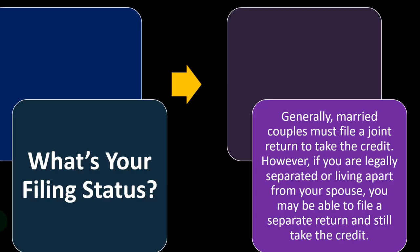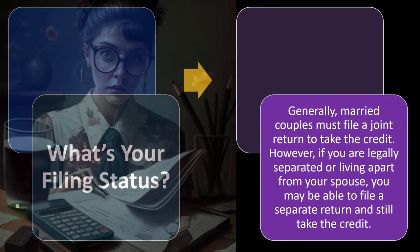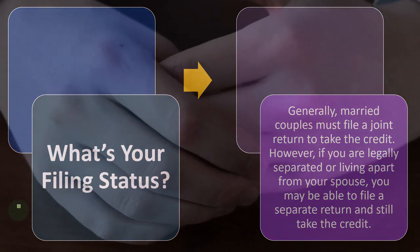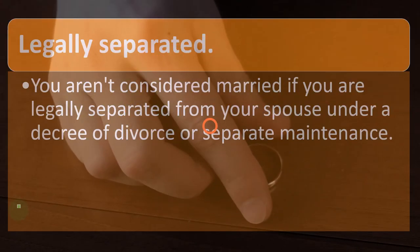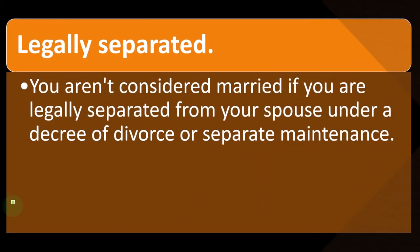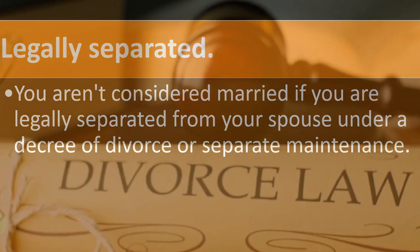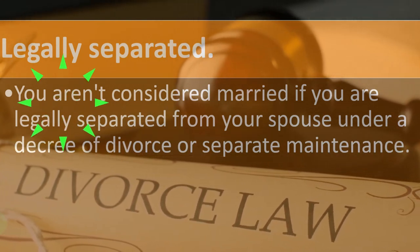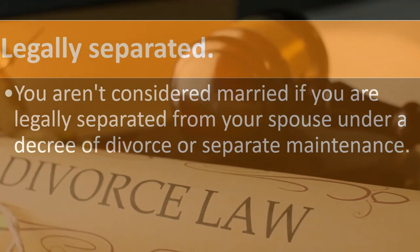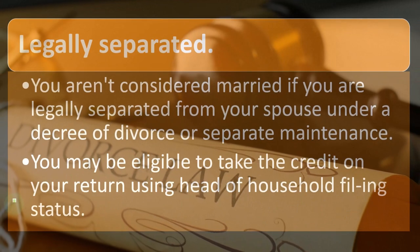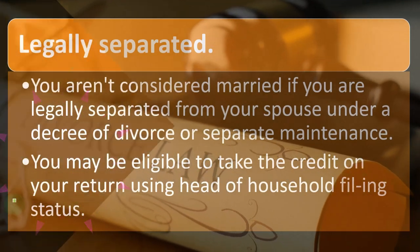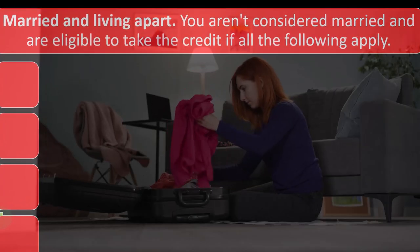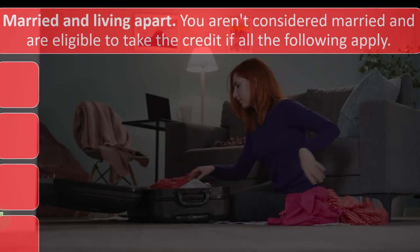However, if you are legally separated or living apart from your spouse, you may be able to file a separate return and still take the credit. You aren't considered married if you are legally separated from your spouse under a decree of divorce or separate maintenance. You may be eligible to take the credit using head of household filing status. You aren't considered married and are eligible to take the credit if all of the following apply.